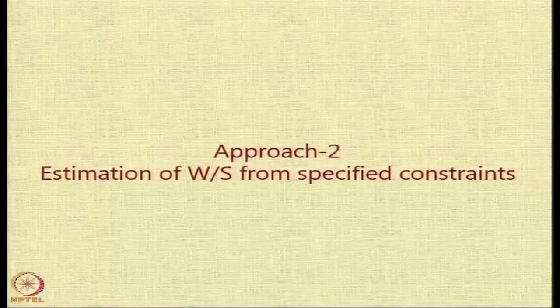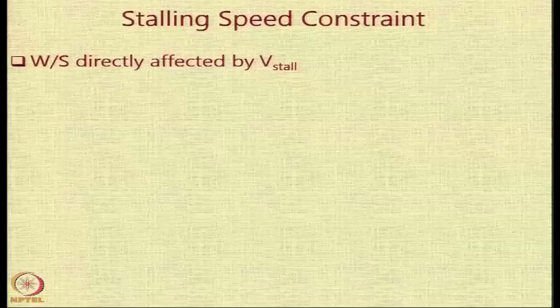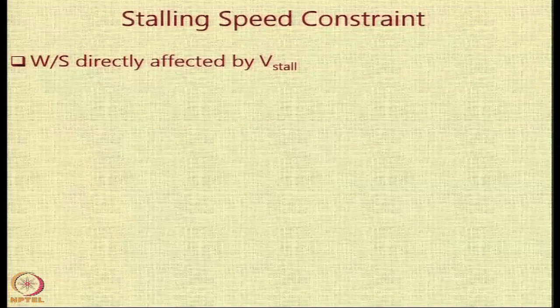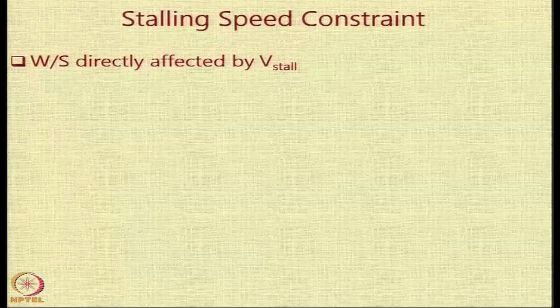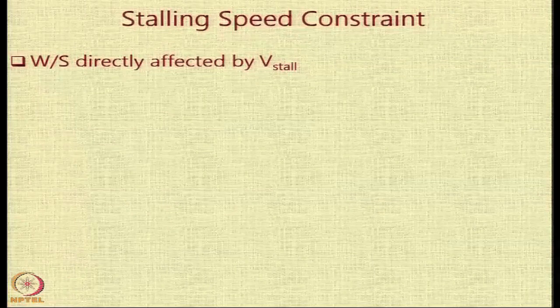Let us look at the second approach in which we estimate the wing loading from specified constraints first, and then use that number to back-calculate the required T/W from other constraints. There are 3 or 4 constraints which depend only on wing loading — I remember them as the 3 'inks': the instantaneous turn, ceiling, stalling, and climbing.